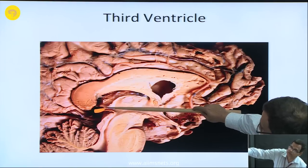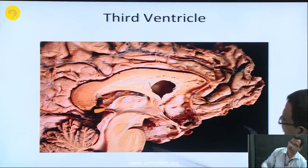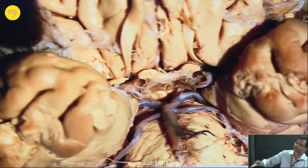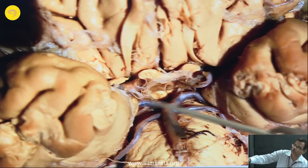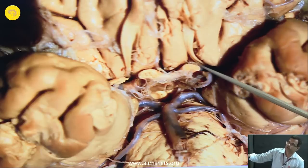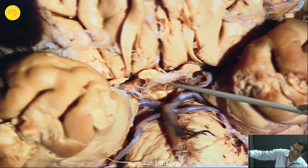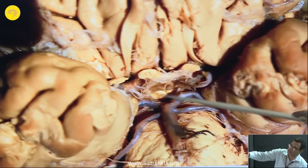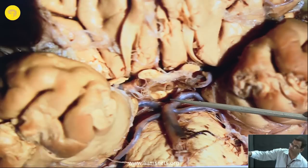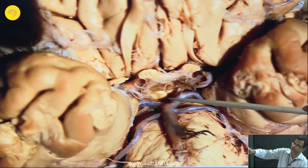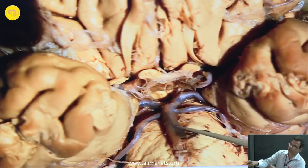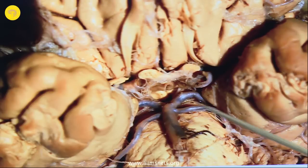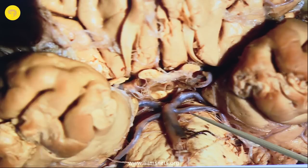The suprapineal recess is there and here is the pineal recess. This is showing the structures in the floor of the third ventricle from below — these are the two temporal lobes. You can see the optic nerve, optic chiasma, then the median eminence, the two mammillary bodies, the interpeduncular fossa, and here lies the posterior perforated substance. You can see the basilar artery with the two P1 segments and this is the superior cerebellar artery.